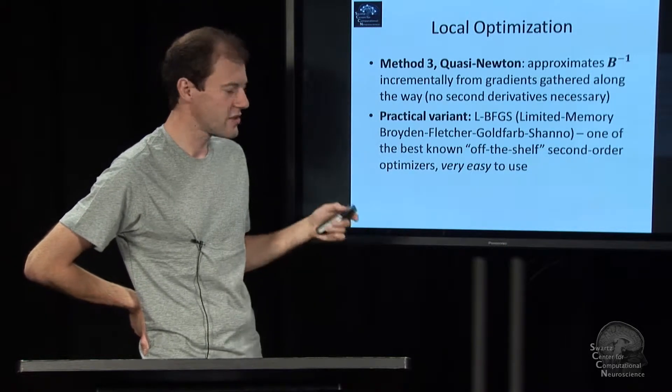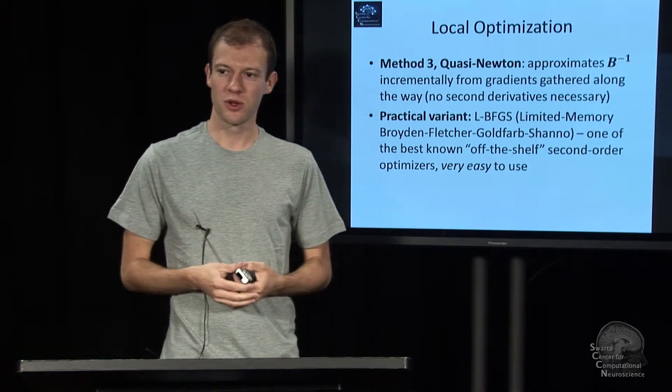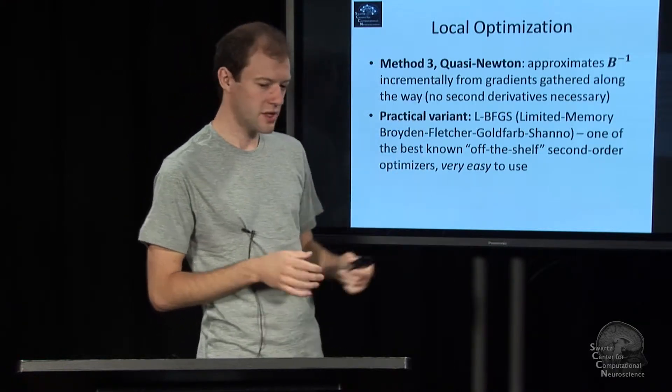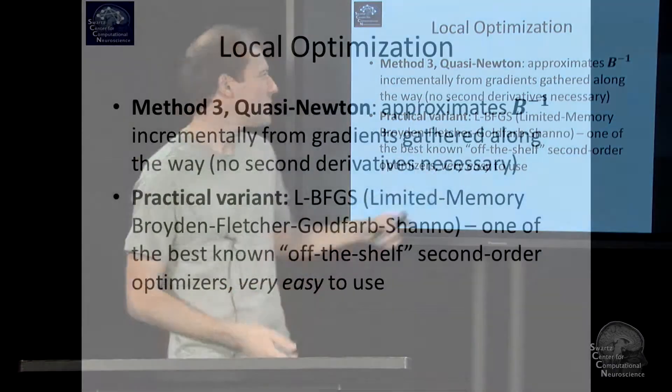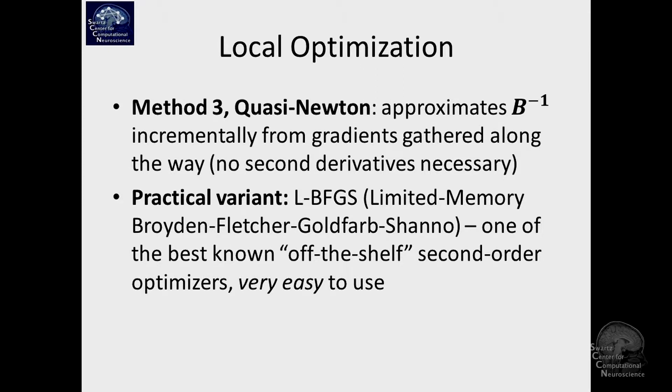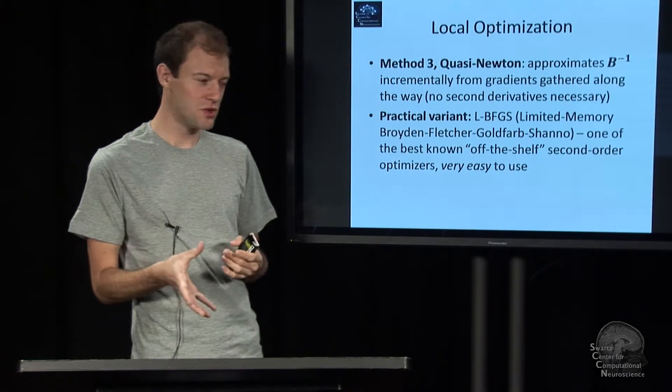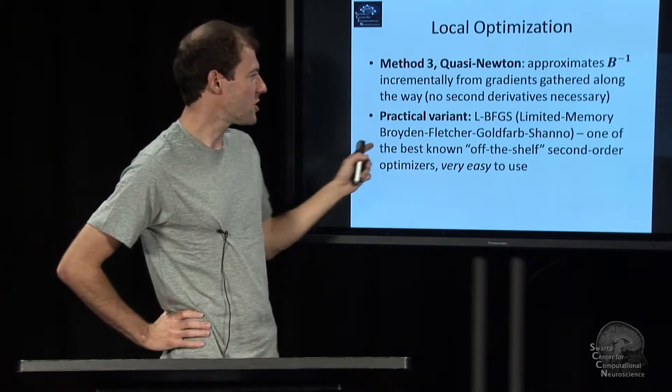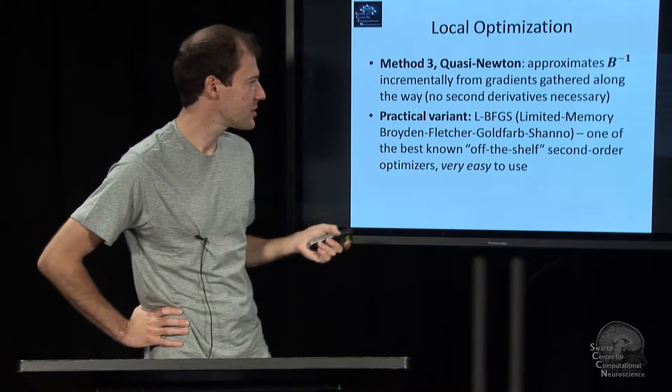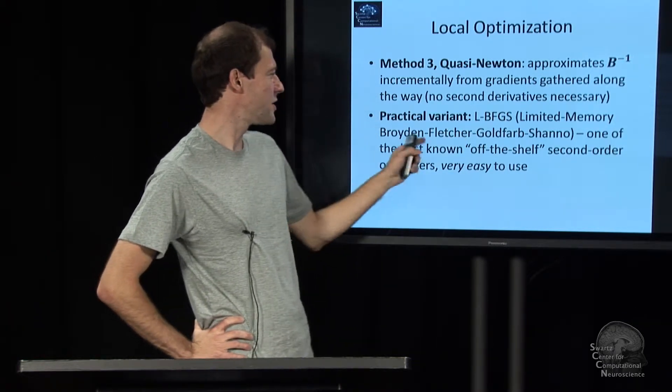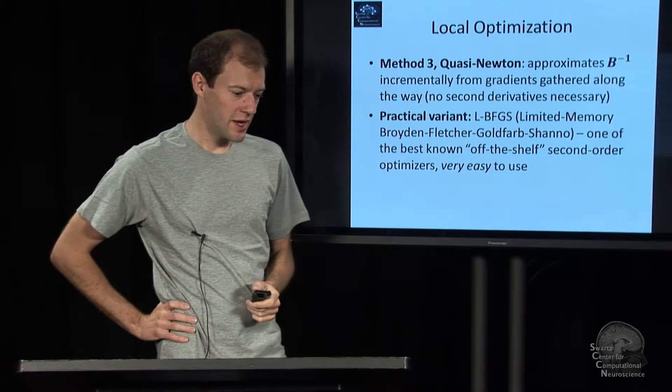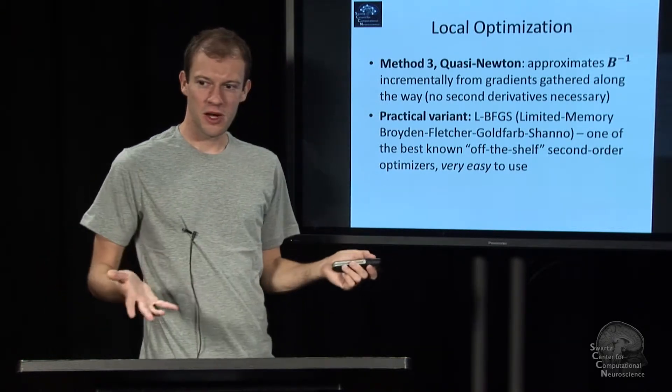There's a flavor of the general Newton approach called quasi-Newton. It combines benefits of both. It approximates the Hessian inverse from the gradients that you saw in previous iterations. It updates its current estimate of the Hessian as it goes along just from gradients, so you don't have to derive the equation for that and you don't have to calculate this huge matrix necessarily. One variant which is probably the most popular off-the-shelf method is called LBFGS—limited memory Broyden-Fletcher-Goldfarb-Shanno.